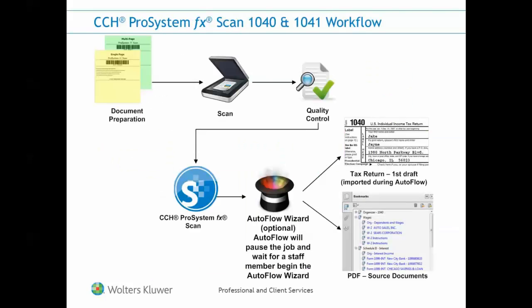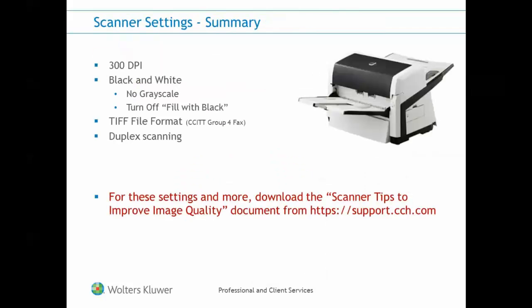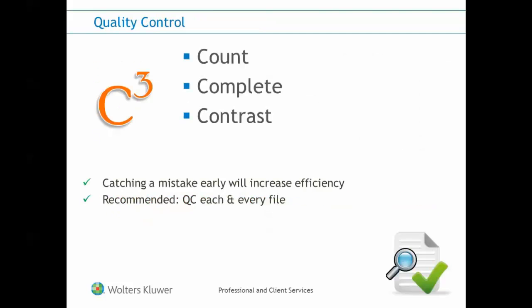After we perform the document preparation, we will scan and review our documents during a quality control step. When we talk about scanning, you'll find some general settings listed here. However, if you need any additional information, please visit our support website and view the document scanner tips to improve image quality. After you scan the work papers, they will be available on screen to perform a quality control check. Most of our successful firms perform a QC step on each and every file, since catching a mistake early in the process is much quicker and efficient to correct. Quality control may include counting pages, verifying the completeness and contrast of images.